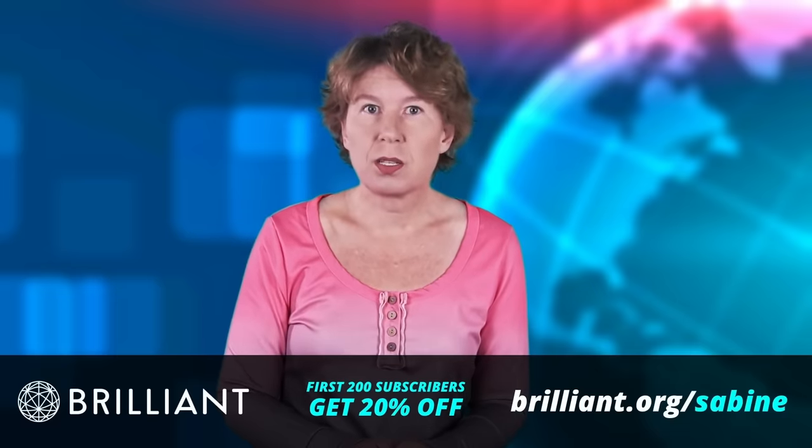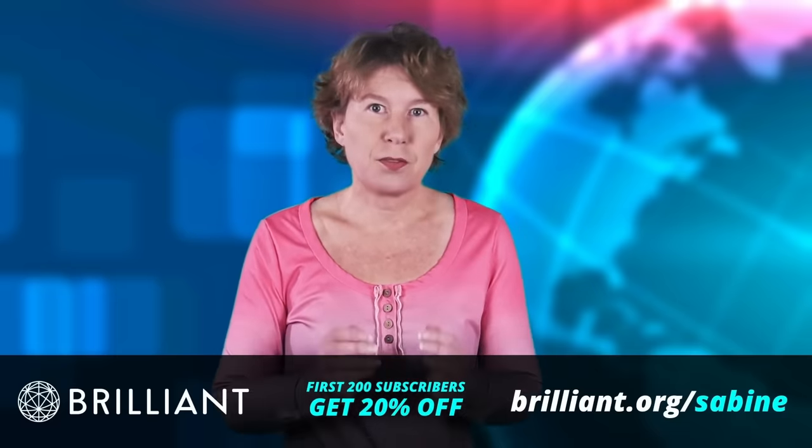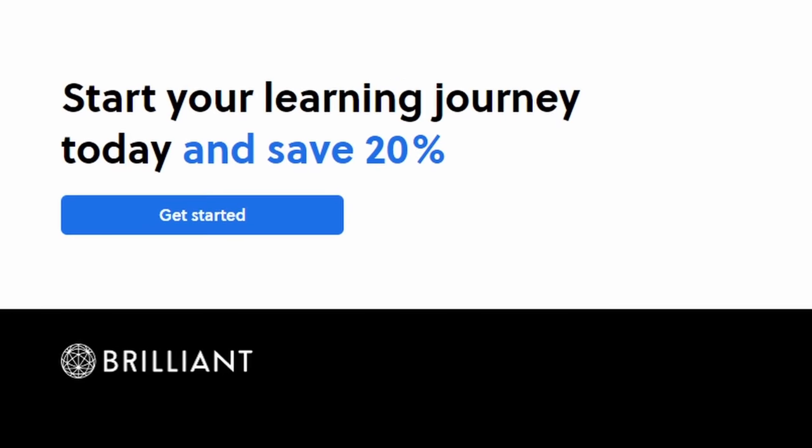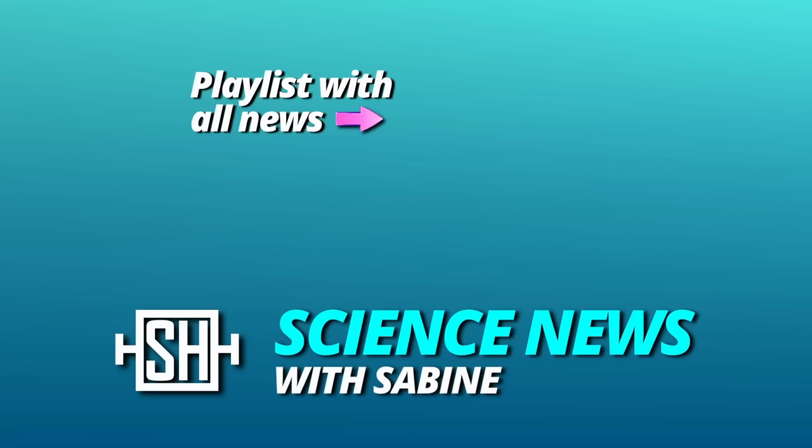If you want to try it out for free, use our link brilliant.org slash sabine. First 30 days are free and the first 200 of you to use this link will get 20% off the annual premium subscription. Thanks for watching. See you tomorrow.